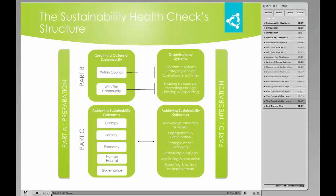Let's have a look. The Sustainability Health Check has five parts. Part A: Preparation outlines the health check's purpose and structure, including how to use it and the concept of sustainably healthy councils — this is outlined in Chapter 2. Part B: The Assessment and Creating a Culture of Sustainability explores and reviews organisational systems and relationships within Council, and its relationship with the community, and provides relevant worksheets — this is outlined in Chapter 3.